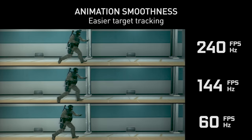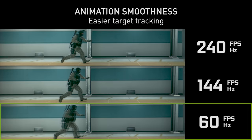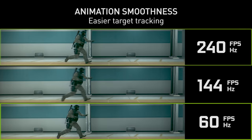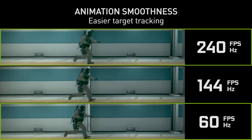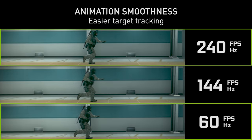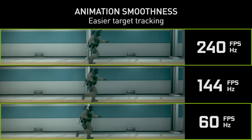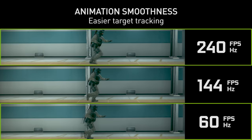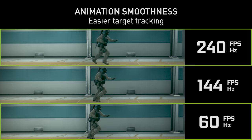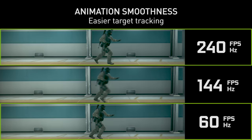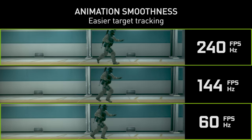Looking at the top and bottom comparison, you can see that 60 frame and 240 frame rate video have a very different feel in terms of smoothness. The 60 frame rate video has much larger animation steps, making it feel much less smooth than the 240 frame per second video.